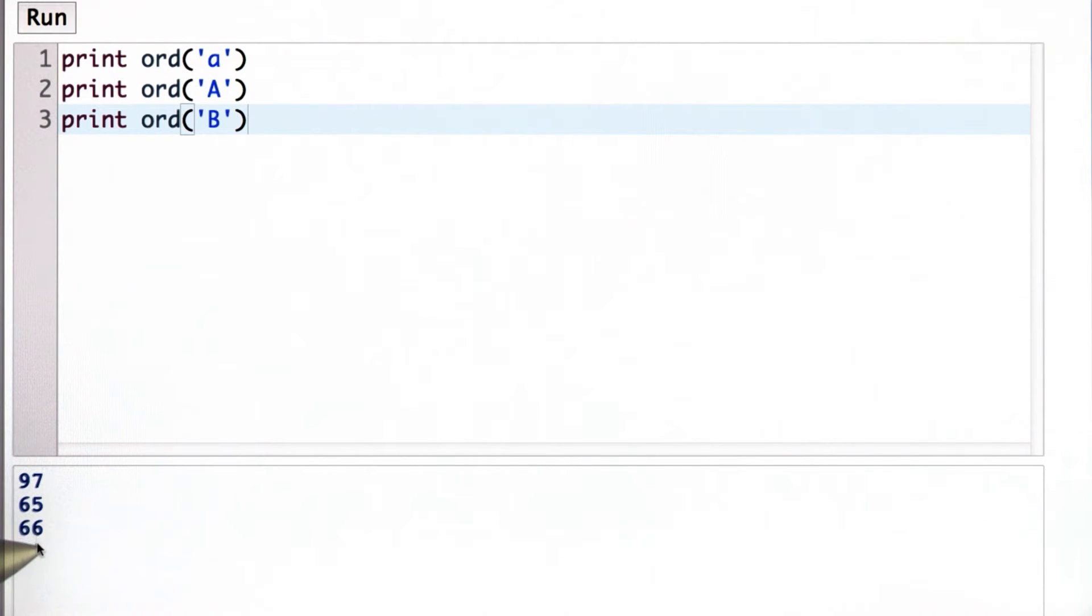So the numbers are sort of sensible. B is higher than A. The lowercase letters have different ordinals than the uppercase. So if we try lowercase b, we should expect to get 98, and that is indeed what we get.